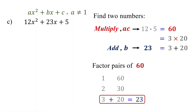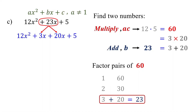If you notice, 3 and 20 add up to 23, so these are the two numbers we are looking for. While listing the factor pairs, if you find a pair that works, you do not need to continue listing the remaining pairs, since only one pair satisfies both conditions. Moreover, if you can mentally figure out the two numbers, there is no need to make a list. The next step is to split the middle term using the two numbers we found. We can rewrite 23x as the sum of 3x and 20x.